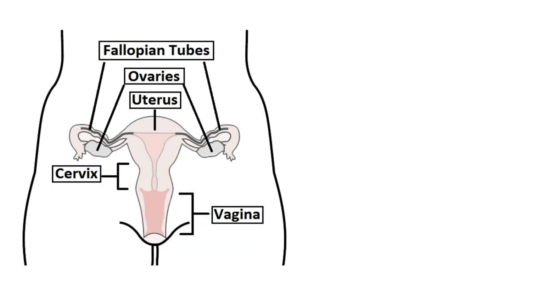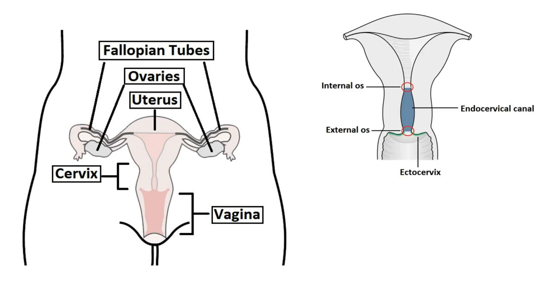Before we begin our discussion on cervical cancer itself, let's quickly recall some anatomy knowledge on the female reproductive system. It consists of five major parts: the vagina, which allows deposition of sperm during sexual intercourse; the cervix, which continues proximally with the uterus, the muscular organ that implants the fetus; the fallopian tubes, which transport sperm towards the ovaries; and the ovaries, which produce egg cells. The cervix is the part that connects the vagina and uterus in order to transport sperm cells.